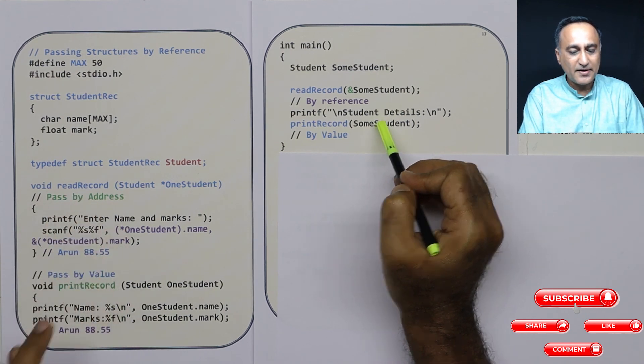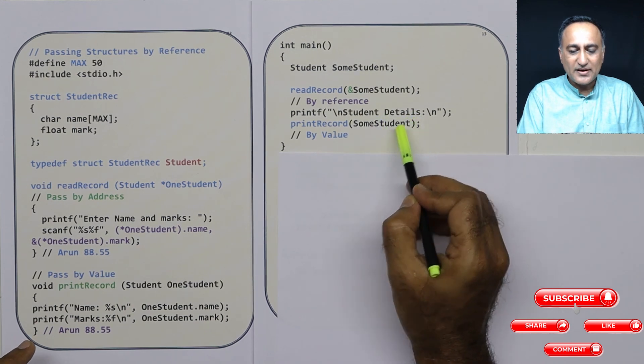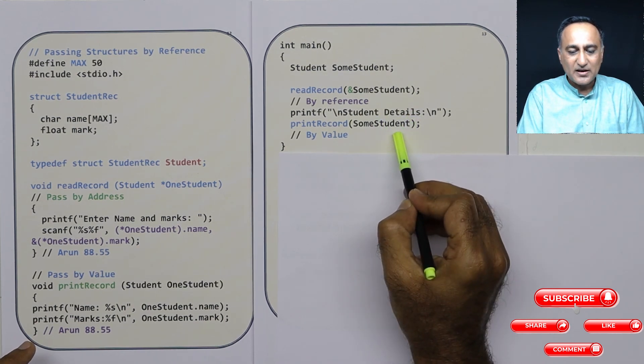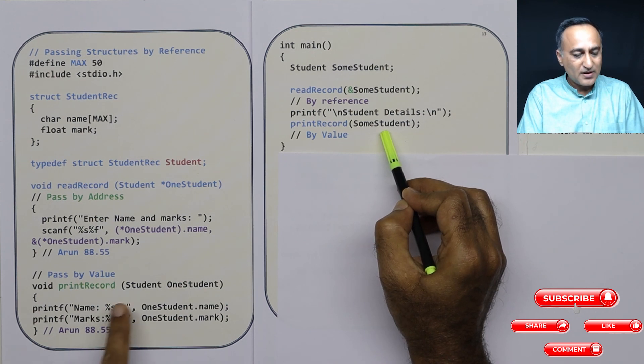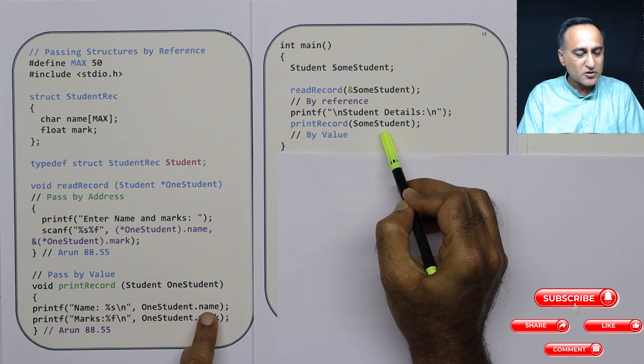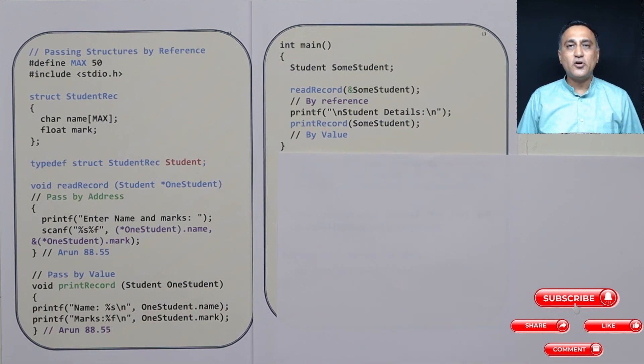So this is when you pass by address. Then to print the student details, I am passing this particular structure variable by value. Here that's why you don't have star, student one student. I am printing one student dot name, one student dot mark. Assuming this is the entered data, this is what is going to come out on your screen.